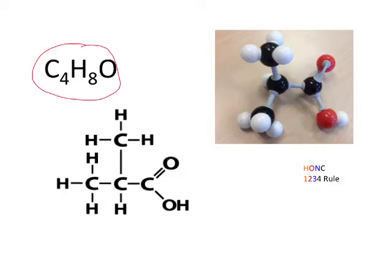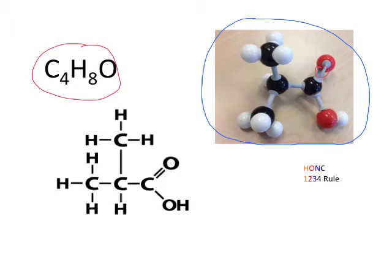Over here is a photograph of a model of the actual molecule. A couple of things to note: there's a double bond right here, every other bond is single. Red represents oxygen in these molecules, black represents carbon, and the white little spheres are all representing the hydrogens. And you can, of course, use your HONC rule.